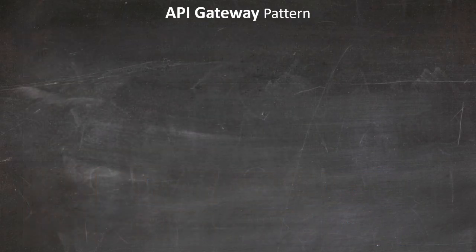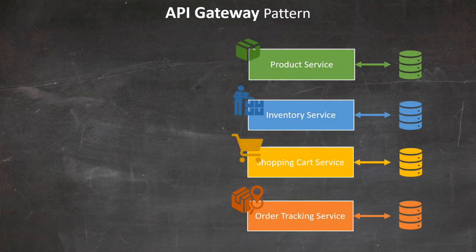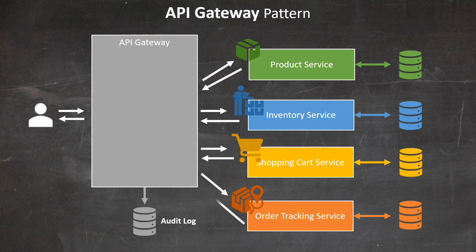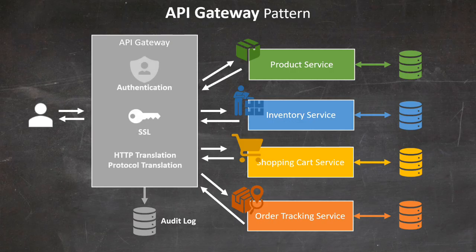Let's now apply this pattern to our e-commerce solution. It starts with the clients of our microservice solution. The API Gateway intercepts all incoming API calls from clients and routes them to the appropriate microservices before aggregating the responses and returning them to the client. Within the Gateway, we can take care of authentication, secret management, and HTTP and protocol translations.